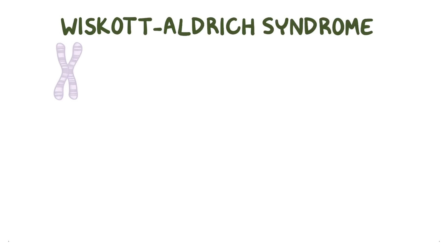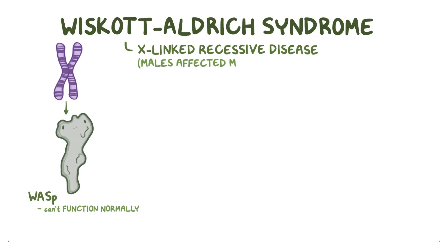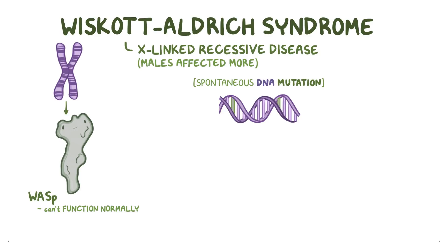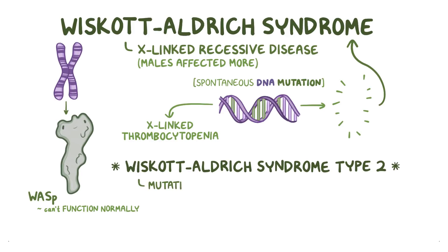In Wiscott-Aldrich syndrome, a mutation in the gene results in a Wiscott-Aldrich protein that can't function normally. It's an X-linked recessive disease, and as a result males are affected more often than females. Sometimes the disease isn't inherited and instead arises from a spontaneous DNA mutation in the Wiscott-Aldrich syndrome gene. A small mutation in the gene might result in a mild disease called X-linked thrombocytopenia, whereas a large mutation can result in a shortened protein or no protein at all, and that causes Wiscott-Aldrich syndrome. There's also a condition called Wiscott-Aldrich syndrome type 2, which is caused by a mutation in the WIPF1 gene, and that's very similar to Wiscott-Aldrich syndrome.